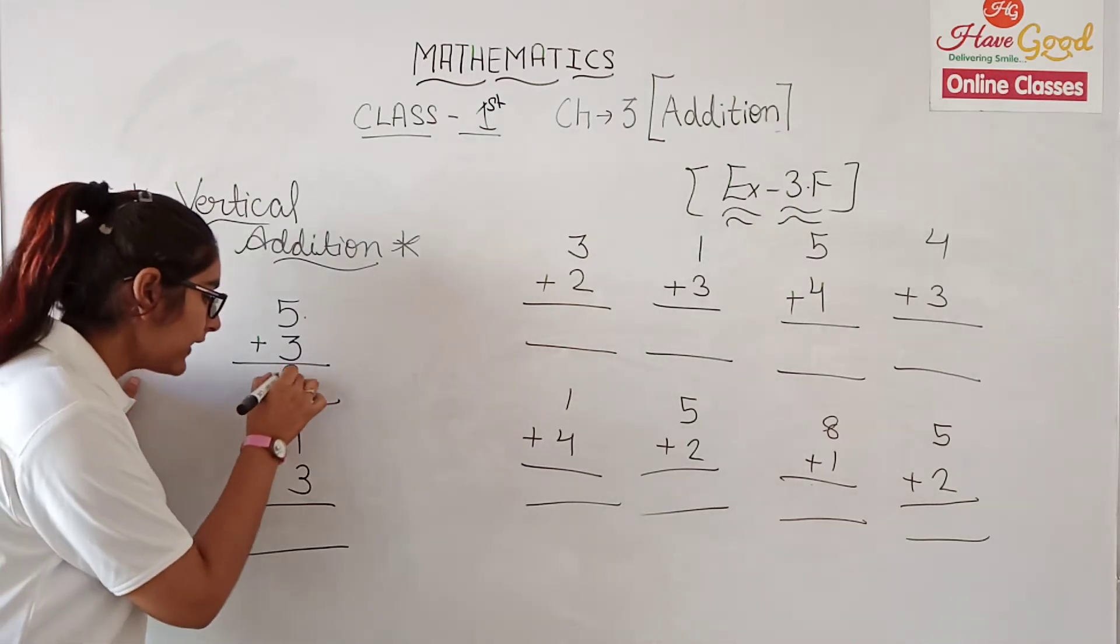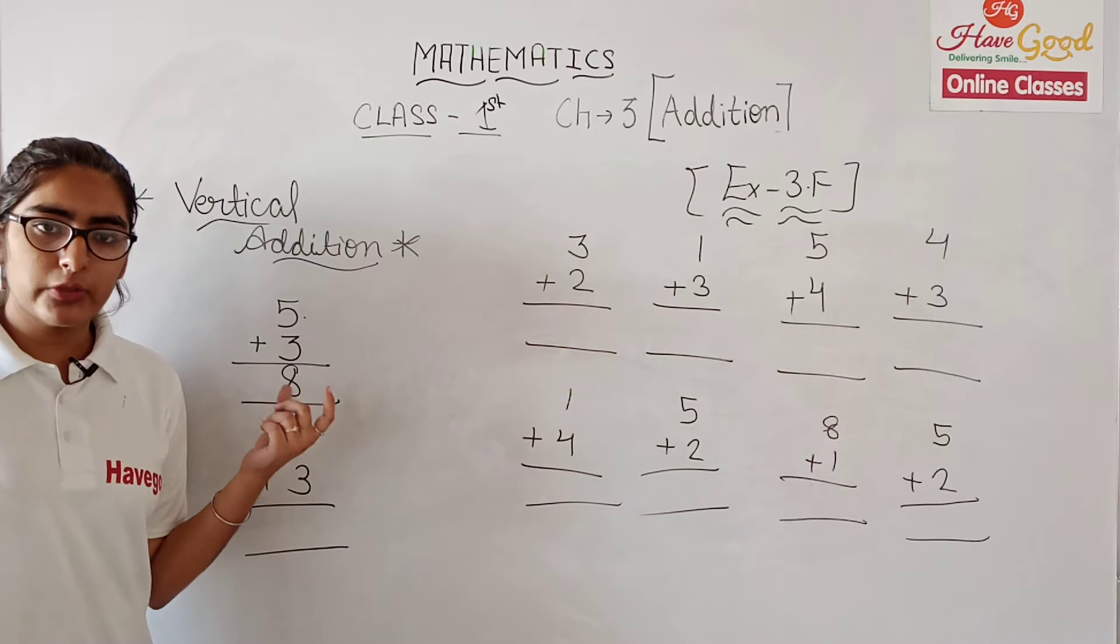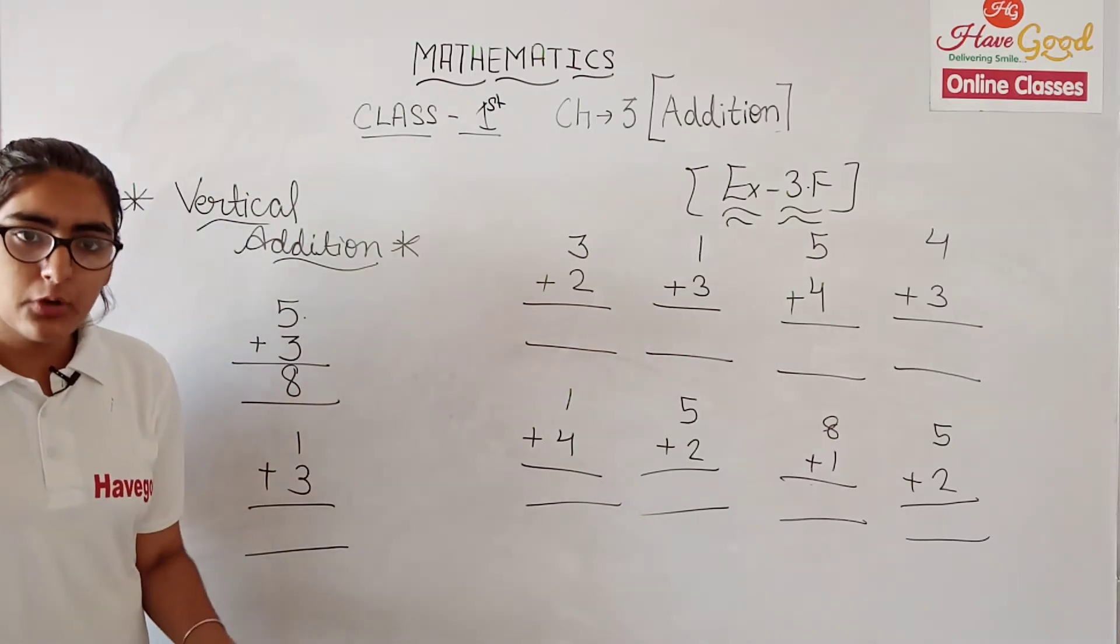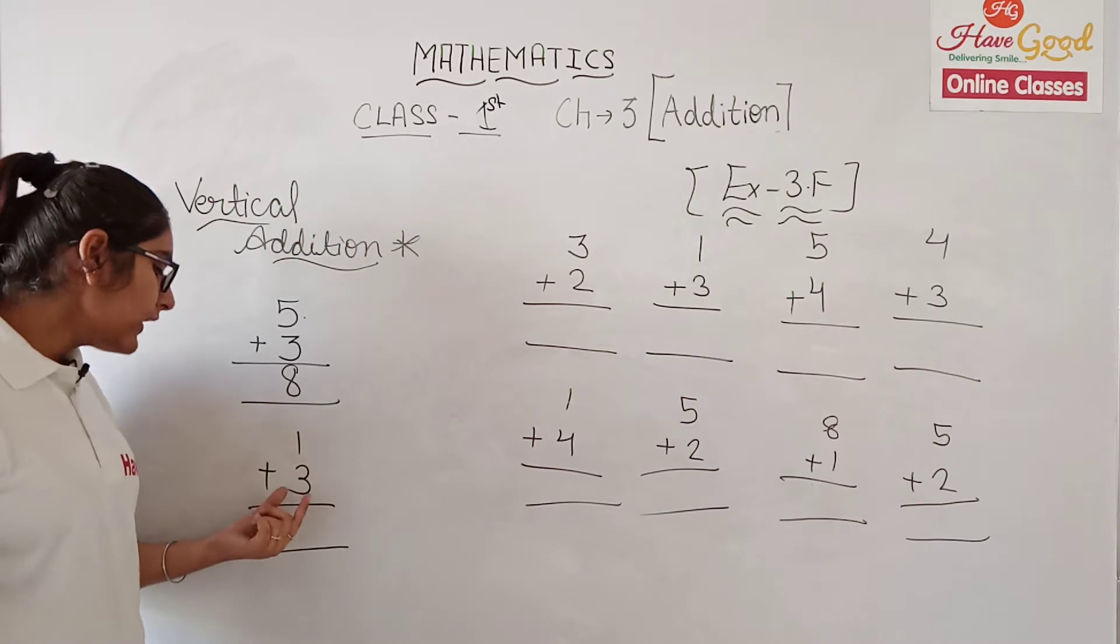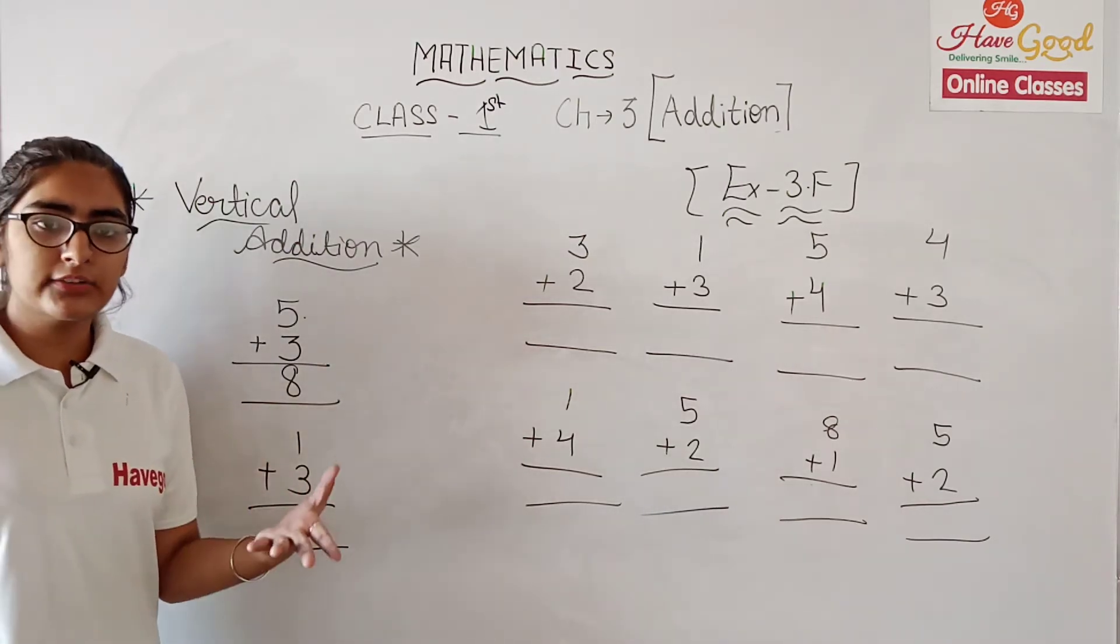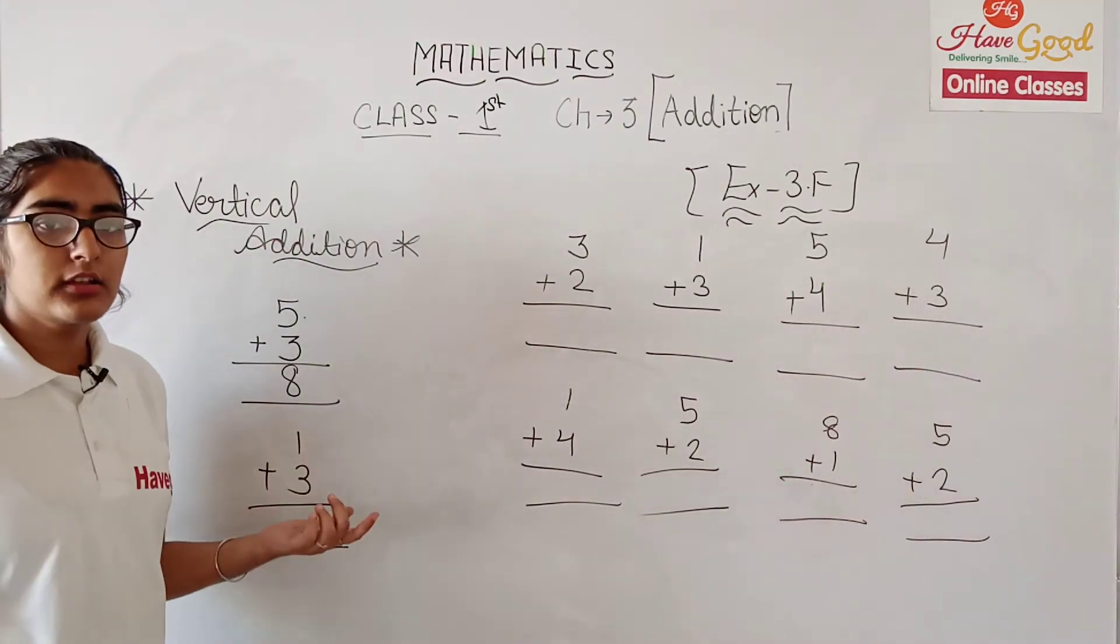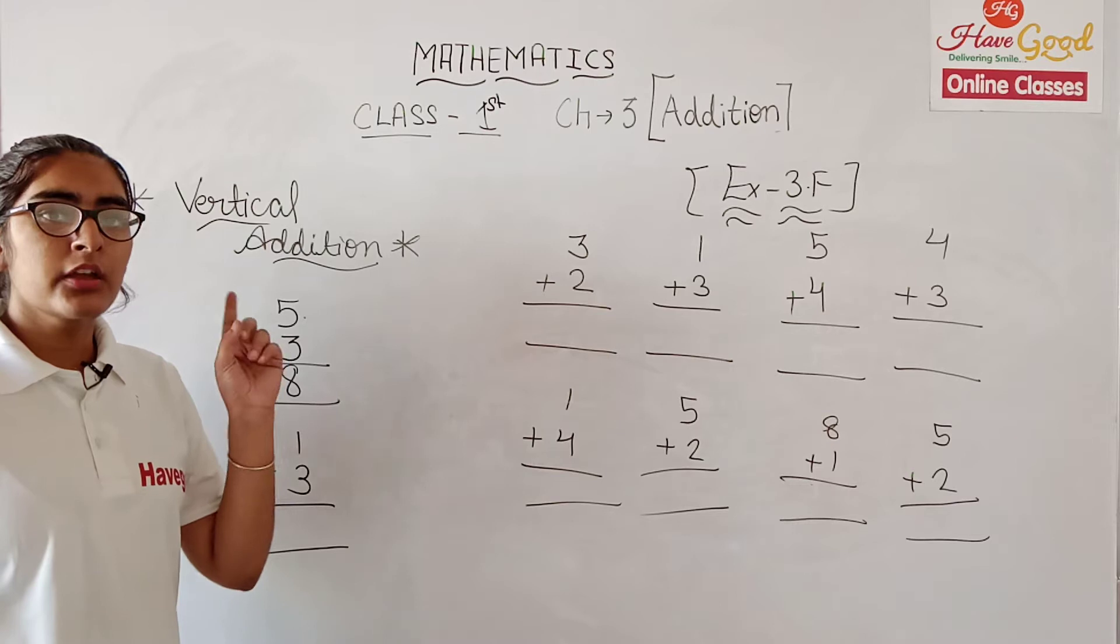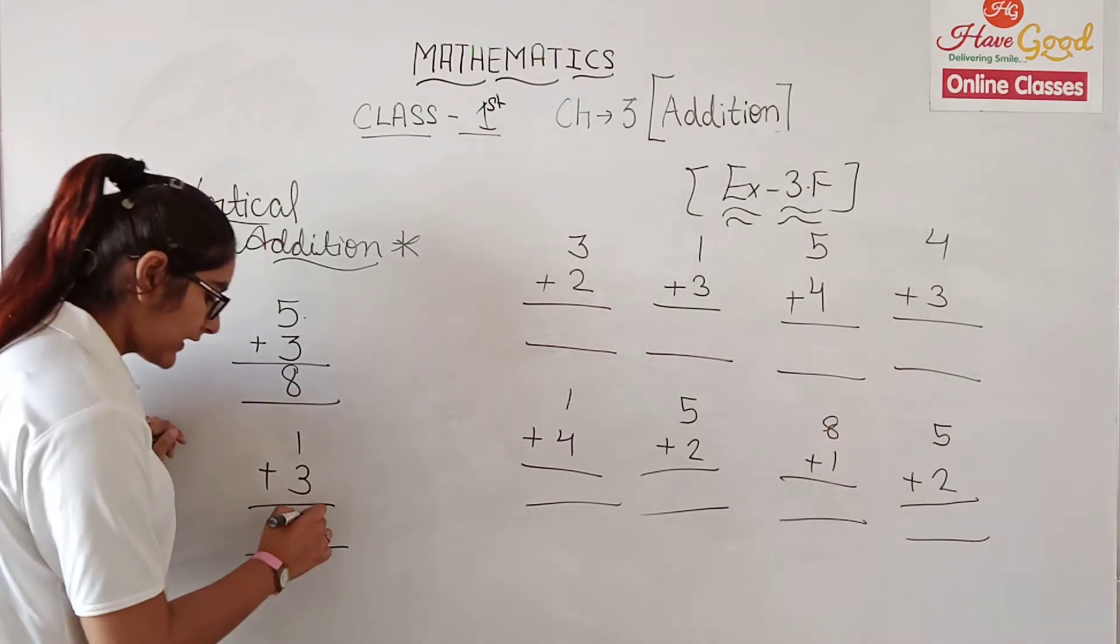Now our answer is 8. In the next one, this is 1 plus 3. So our answer comes as 4. For 1 forward counting on 3: one, two, three, four. This is 4.